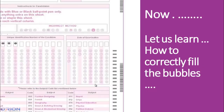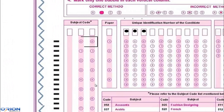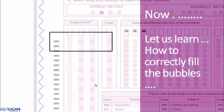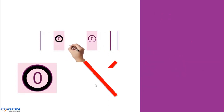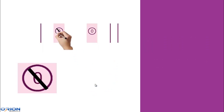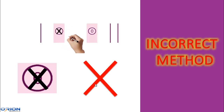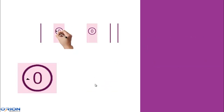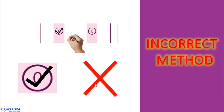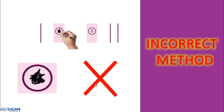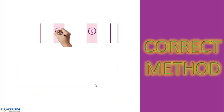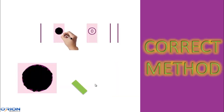Now let us learn the right way to blacken the bubbles. This method of marking the bubbles is wrong. Ticking the bubbles is also not the right method. Partially blackening the bubble is also wrong. The right method is to blacken the entire circle as shown.